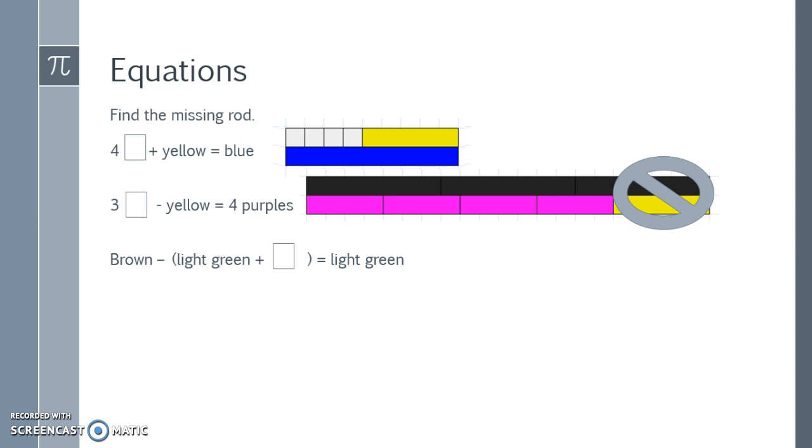Let's say I have a brown and I'm going to take away a light green plus something and that has to equal a light green. So I know a couple of things for sure. My goal is to get to light green and I'm going to start with the brown and take away something. So I'm going to take away something that is a light green plus something else.